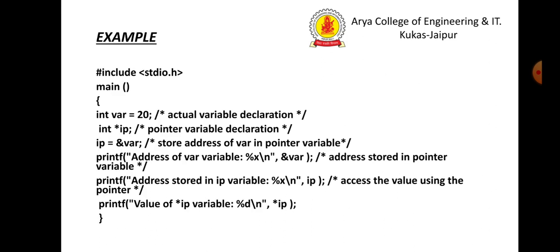Here is the example. We have a variable var equal to 20. Second, int pointer ip is the pointer variable. Here we cover our first point: declare a pointer variable. Second point: assign the address of a variable to a pointer. So ip equals ampersand var. Here we are assigning the address of var to the ip pointer.